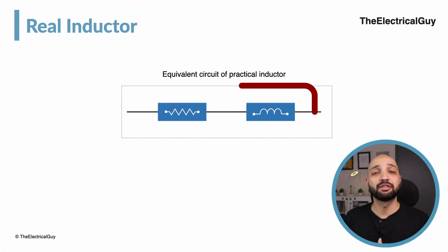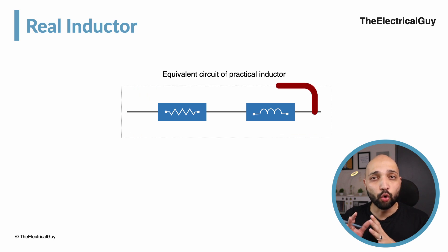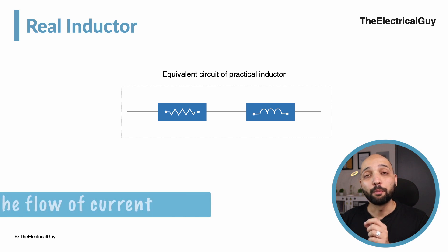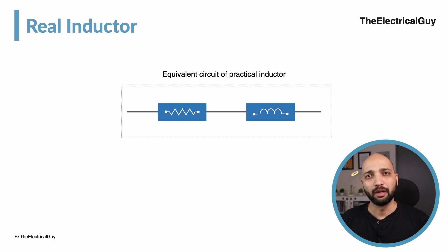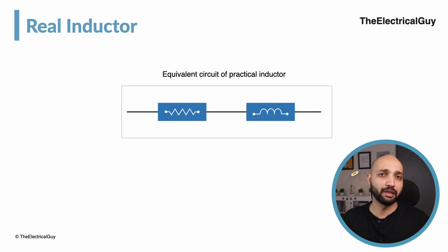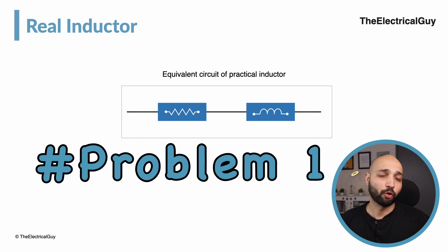Now since resistance is introduced, this practical inductor will not only oppose the change in current, but it will also oppose the flow of current to some extent, which is not at all expected from the inductor — it is supposed to only oppose the change in current. This practical opposition is no more only the inductive reactance; we need to call it by a more comprehensive term, which is impedance. And this is problem 1.